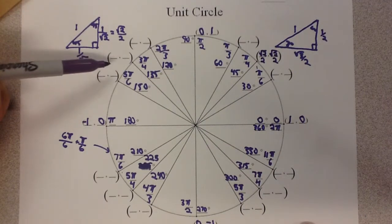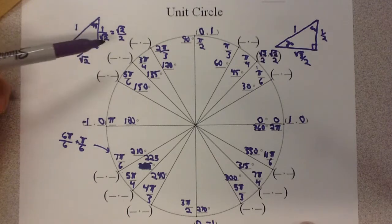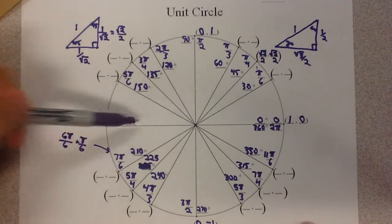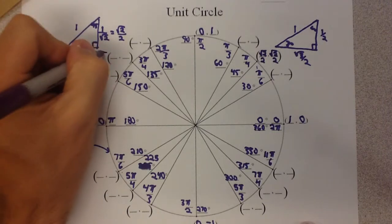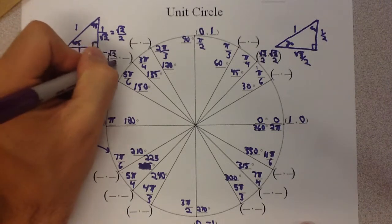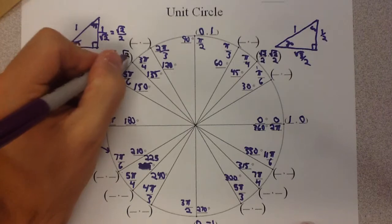Now, if I look over here in quadrant 2, the numbers are the same, except I have a negative, because in quadrant 2, my x is negative. So, this is negative root 2 over 2, positive root 2 over 2.